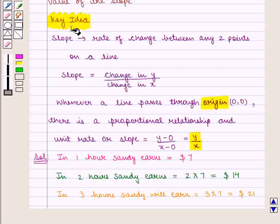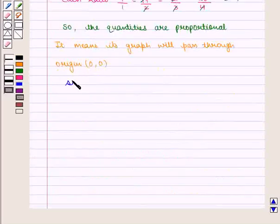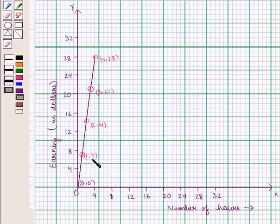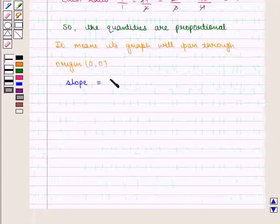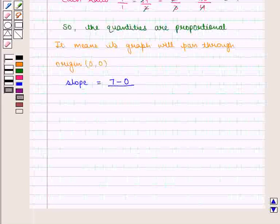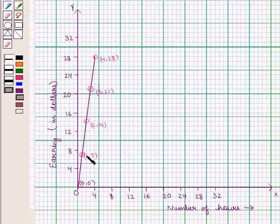Also, from the key idea we know that slope is given by change in y upon change in x. So we have slope is equal to, as we can see here, the change in y will be given by 7 minus 0, upon change in x, and change in x is given by 1 minus 0.